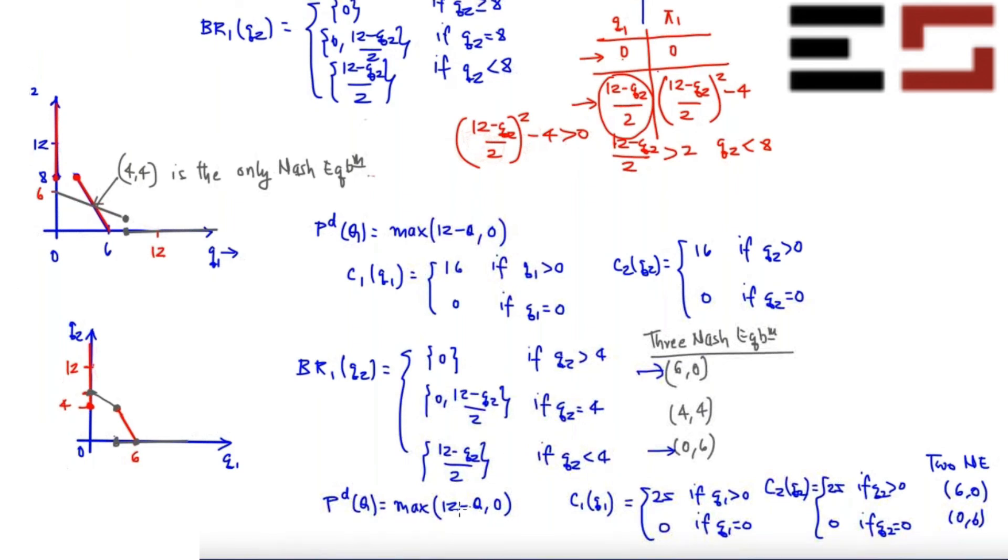And if let's say the fixed cost becomes greater than 36, so notice that the monopoly profit in this case is 30, monopoly revenue in this case is 36. So if the fixed cost is greater than or equal to 36, then no firm would like to produce anything in this industry. So basically this industry will shut down. Is that fine? Because fixed costs are so high that even a single firm cannot operate in this industry. Is that clear?